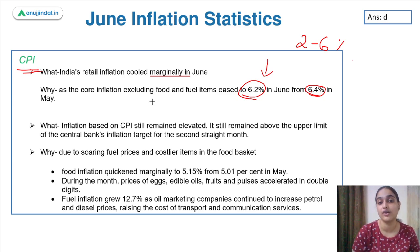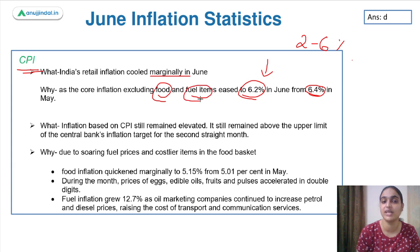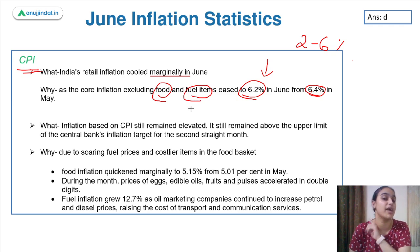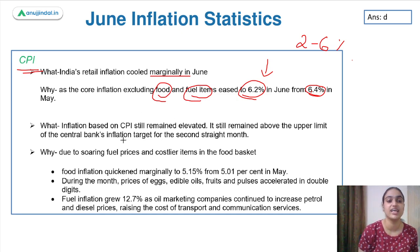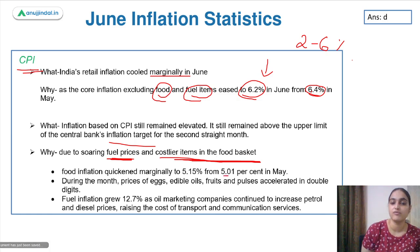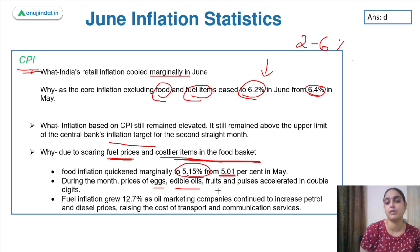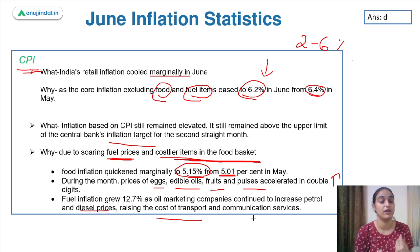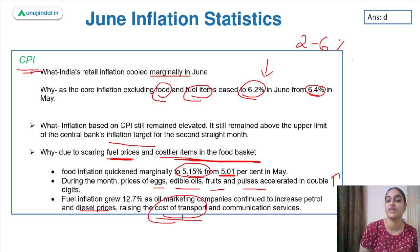The CPI reduction happened because prices of items other than food and fuel decreased somewhat. But because food and fuel prices increased, inflation is still at 6.2% — still surpassing RBI's target due to soaring fuel prices and costlier items in the food basket. Food inflation quickened from 5.01% to 5.15%, with prices of eggs, edible oils, fruits, and pulses all accelerating. Fuel inflation also grew — when petrol and diesel prices rise, the cost of transportation rises, raising the cost of all goods being transported.